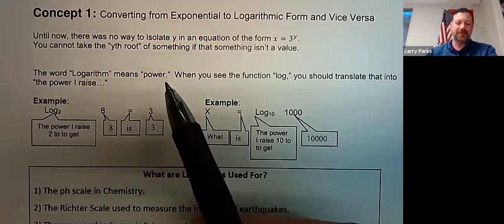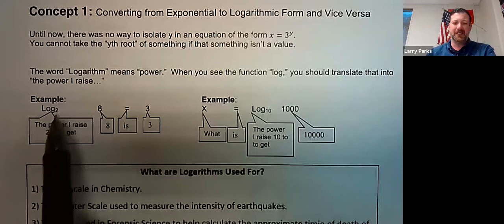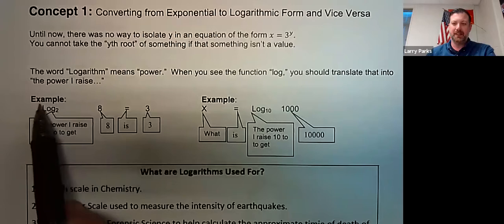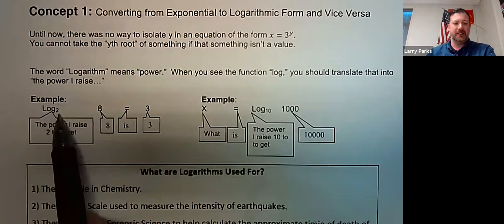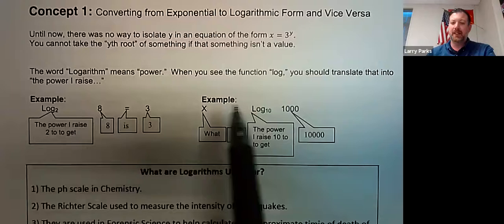The word logarithm means power. When you see the function log, you should translate that into 'the power I raise.' So log base 2 of 8 equals 3 is a true statement. It means: the power I raise 2 to in order to get 8 is 3. In other words, 2 to the power of 3 is 8.